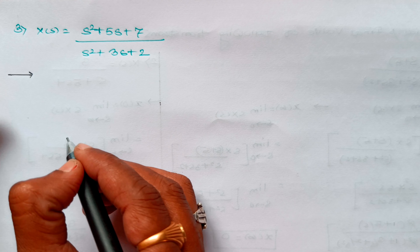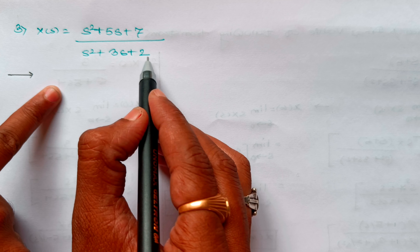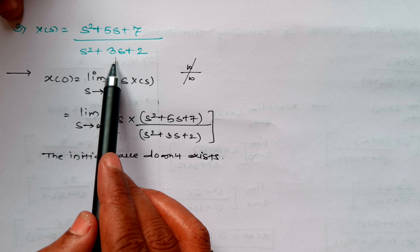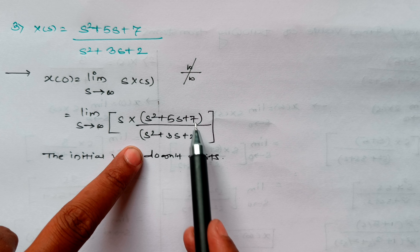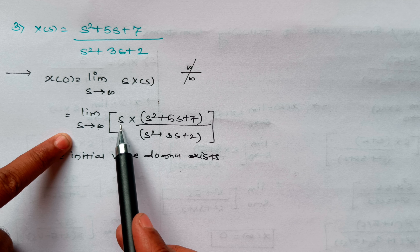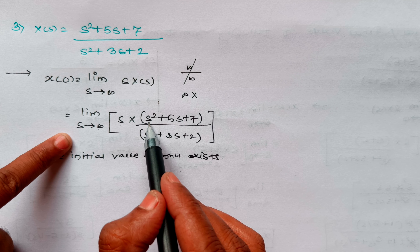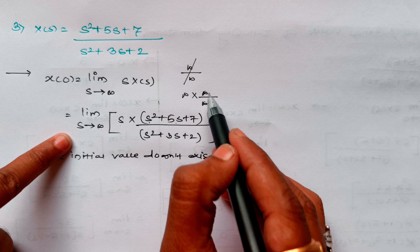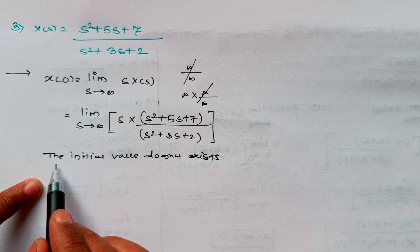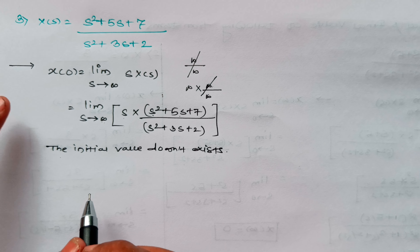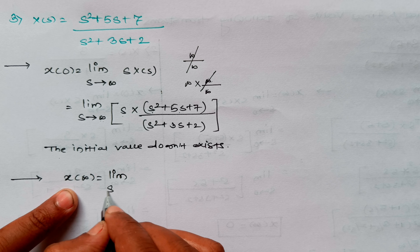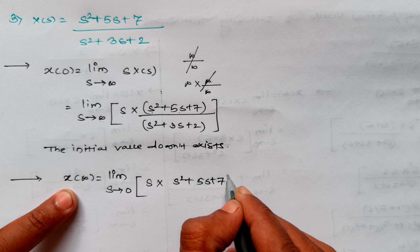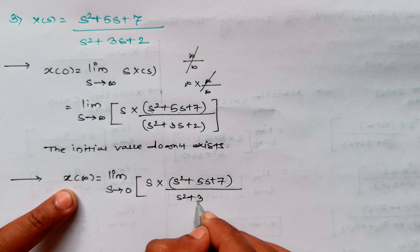Let's take the third example: X(s) = (s²+5s+7) / (s²+3s+2). For the initial value formula, if we apply the limit as s tends to infinity, we get infinity into infinity divided by infinity, which is infinity/infinity — it is indeterminate. Therefore, the initial value does not exist. For the final value, we use x(∞) = limit s→0 of s into (s²+5s+7) / (s²+3s+2).